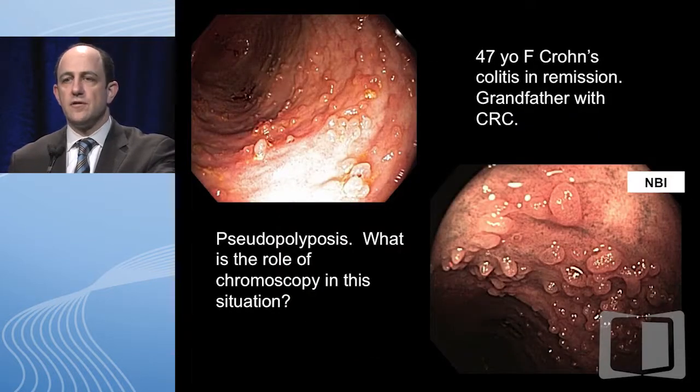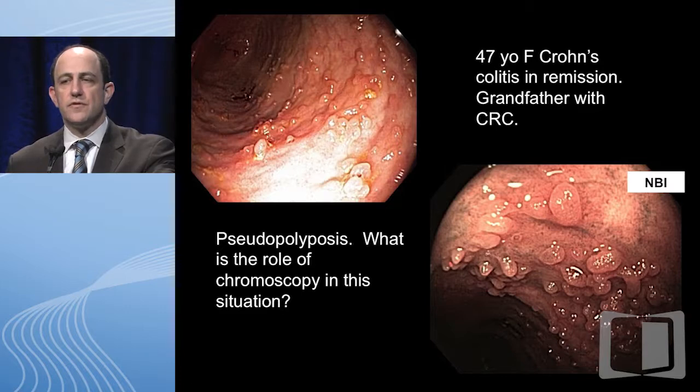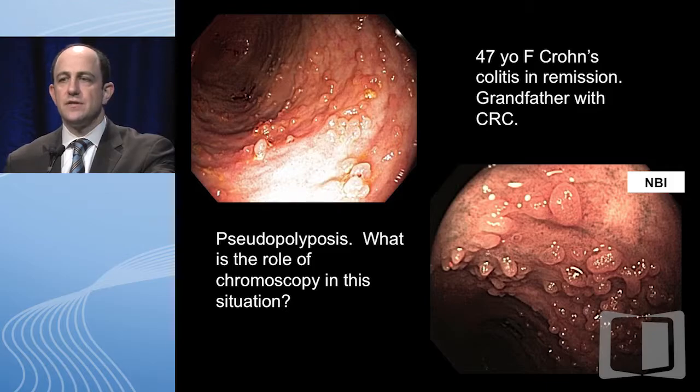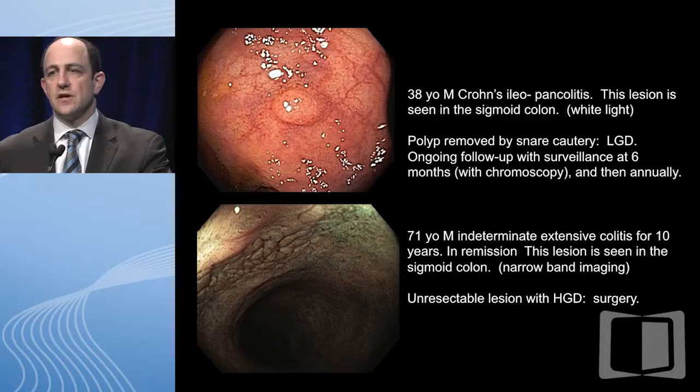I actually did a polypectomy with a snare there. This is a patient with a history of Crohn's colitis in remission, a second-degree family member with older-onset colon cancer. You can see the pseudopolyp appearance. I turned on NBI just to give you the image you see when you flip it on — you can imagine how it might be impossible to tell that this is a sporadic low-grade dysplastic adenoma in the field of colitis. The reality is, it's hard. When you have a field of pseudopolyps it is hard to know what you're looking for, so you really have to be careful and have that discussion with your patient.